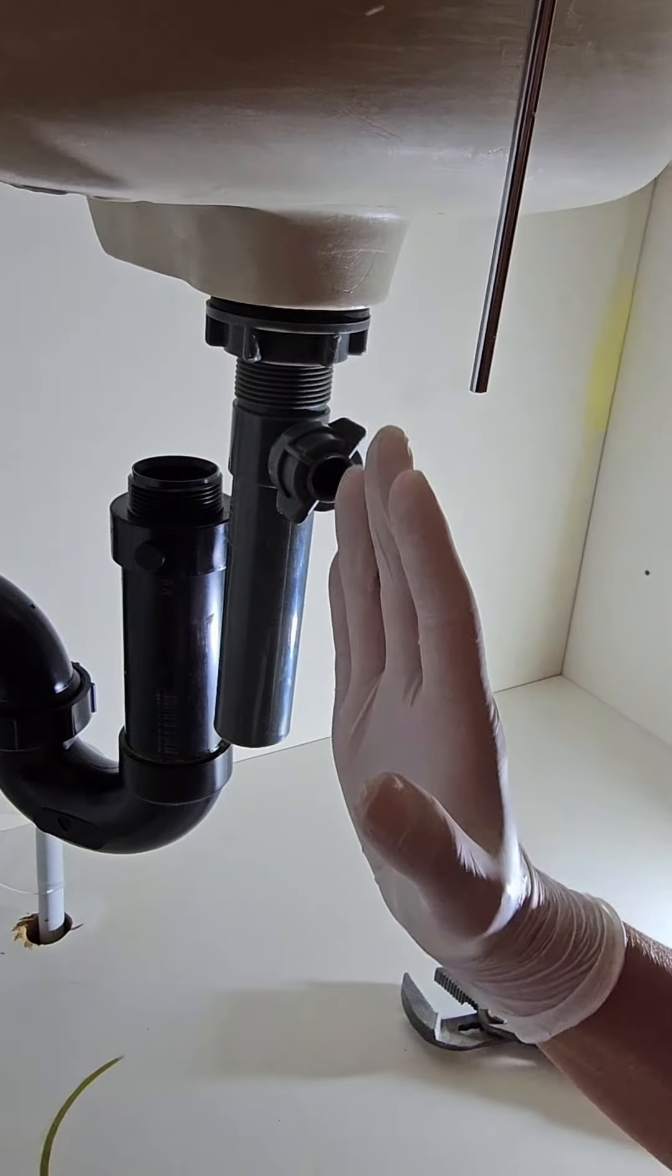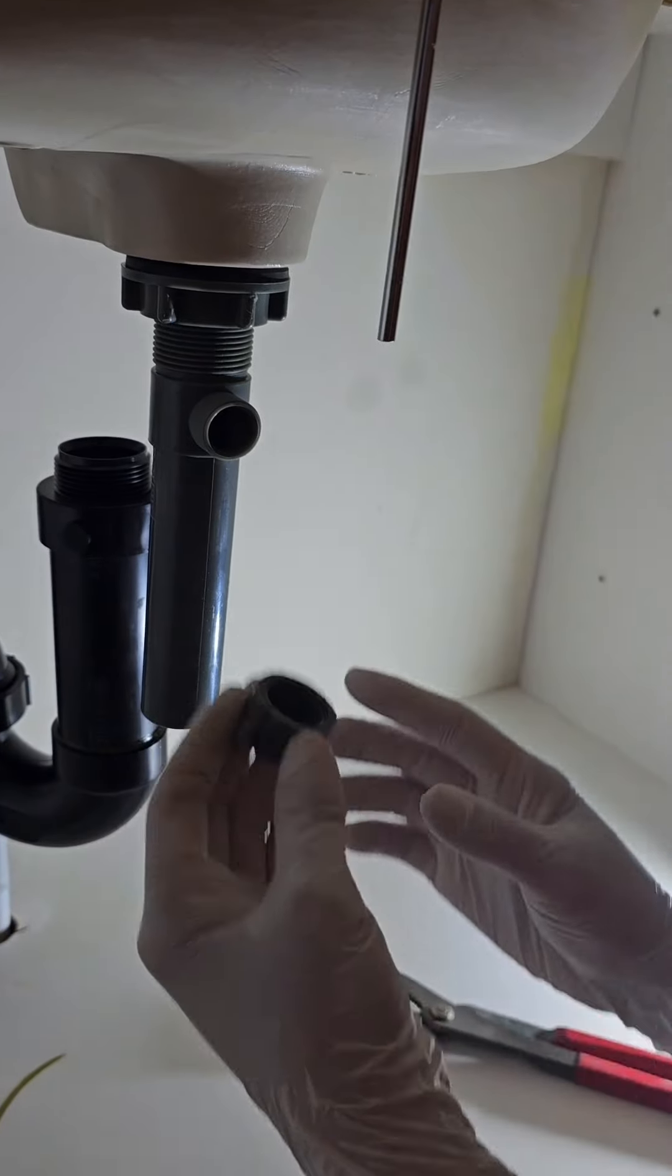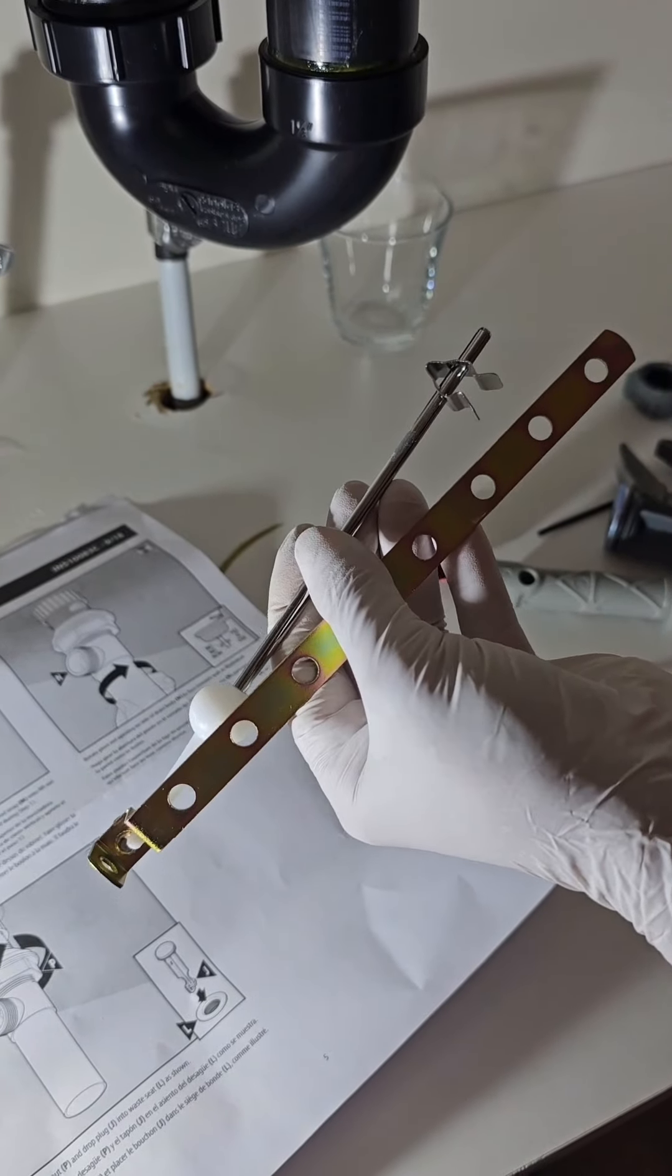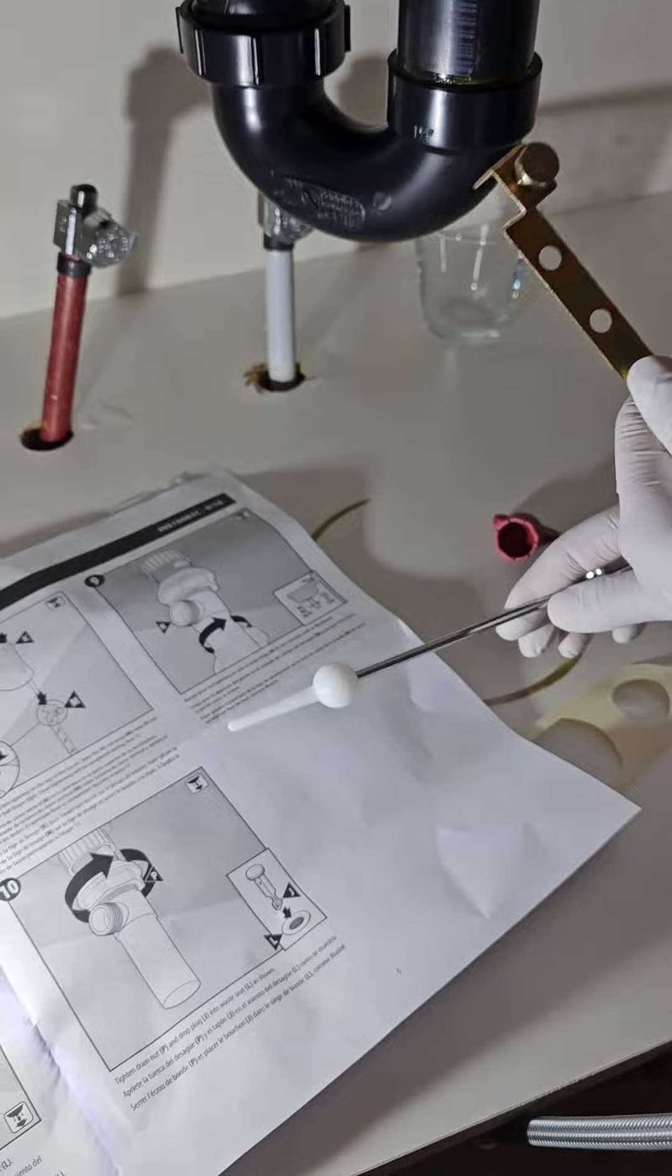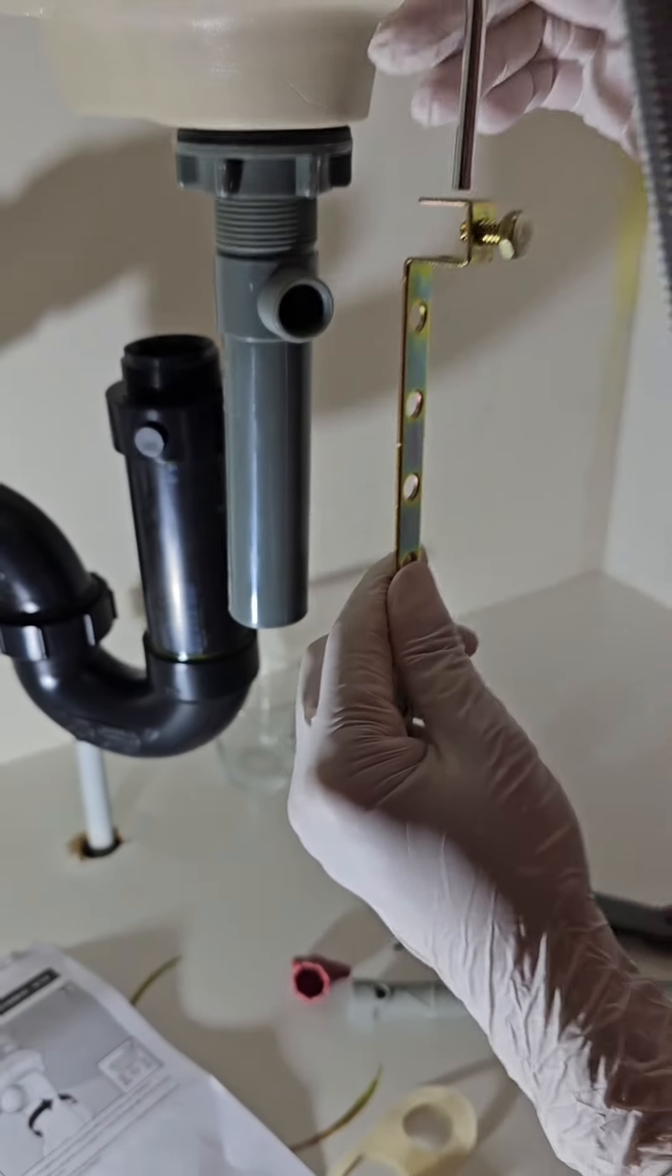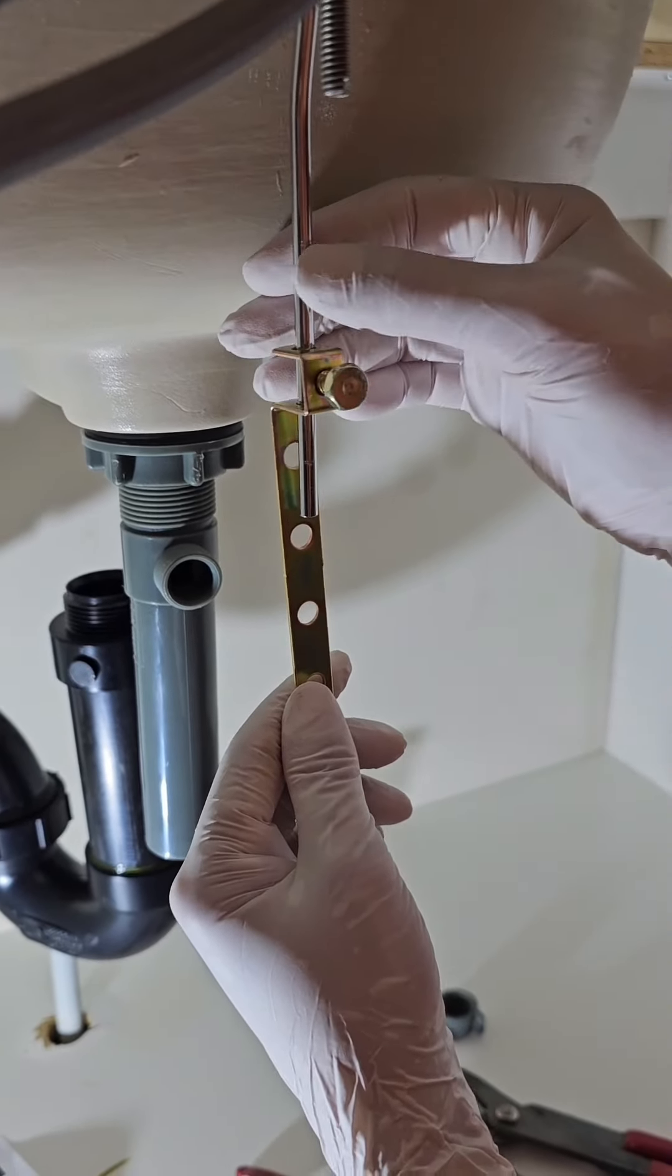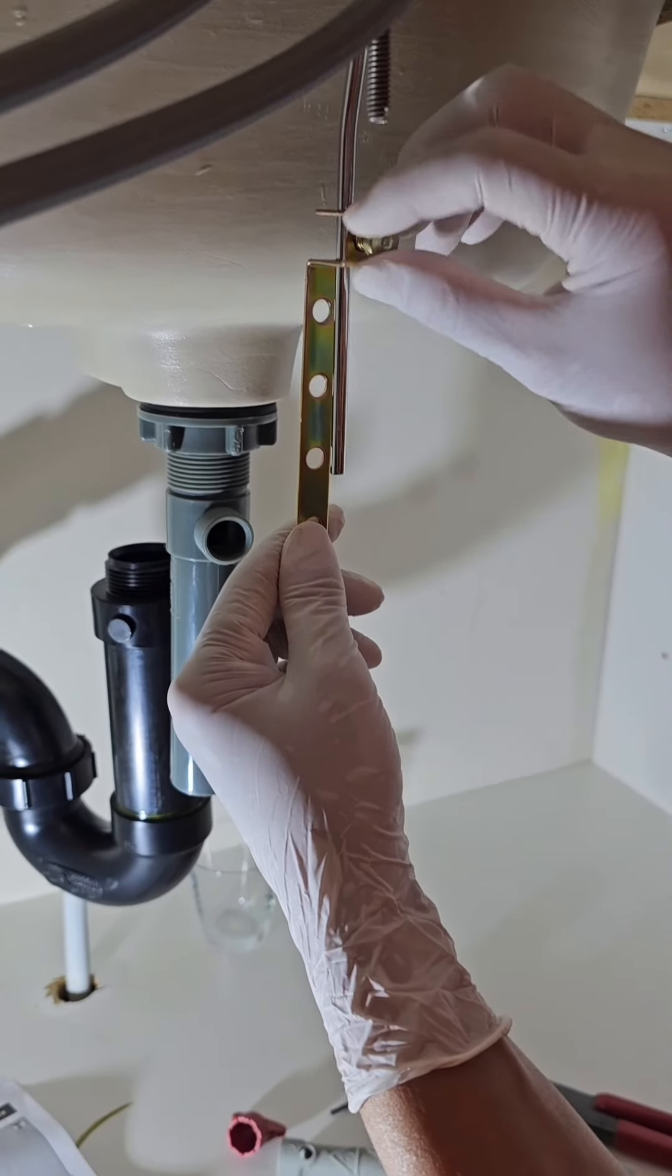To begin installing the pop-up mechanism, unscrew the pivot knot. Now let's prepare and install the clevis strap. Slide it onto the lift rod and tighten the clevis screw.